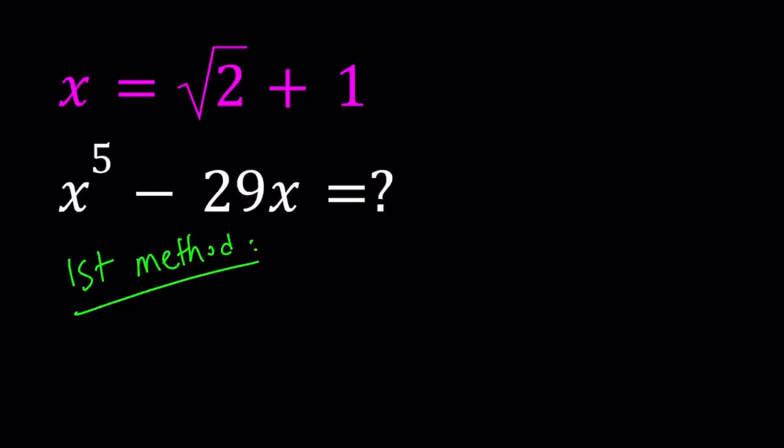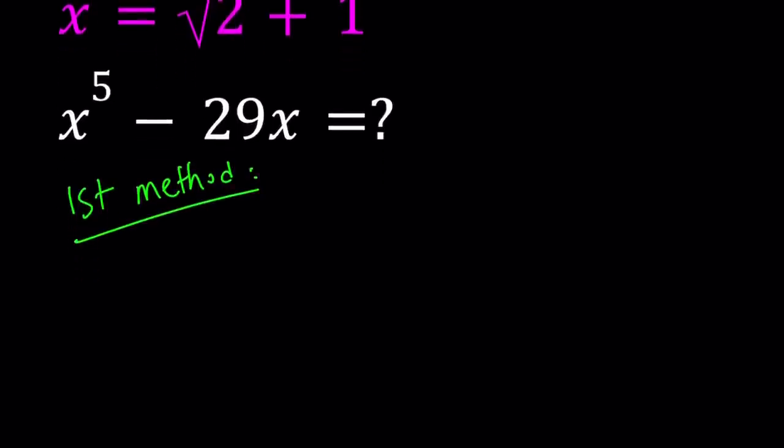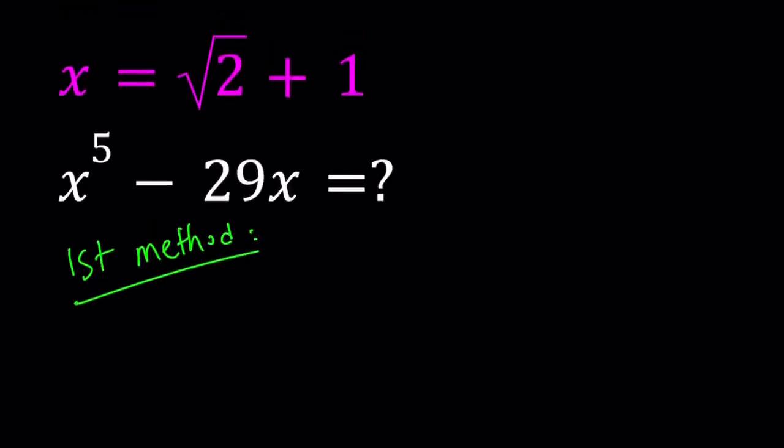For the first method, I'm going to do the following: just substitute x. Since x is given as square root of 2 plus 1, I can go ahead and evaluate this expression by plugging in square root of 2 plus 1 for x.